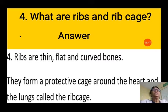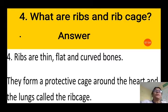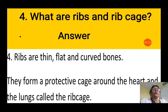Question 4: What are ribs and ribcage? Ribs are thin, flat, curved bones. All the ribs together form a protective cage around the heart and lungs called the ribcage. The ribs are joined at the back to the backbone and at the front to the breastbone.